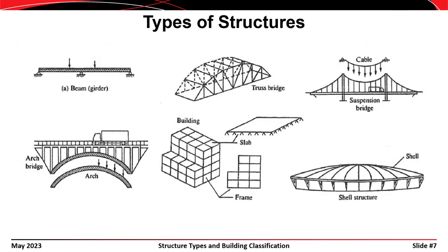A structural system can be defined as a deformable assemblage of various types of structural members that is designed to carry loads to the ground. The most common types of structures, such as buildings and bridges, are typically built from discrete members such as slabs, beams, columns, cables, and arches. Structures may also be made from structural assemblies such as trusses or frames, or from continuous surface elements such as shells or membranes. Structures can be classified in many different ways depending on the objective.